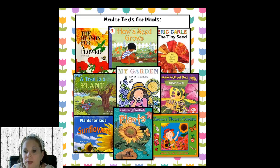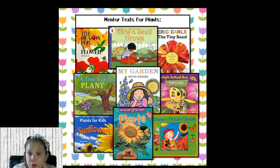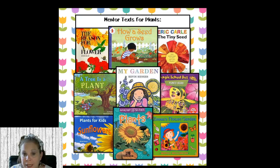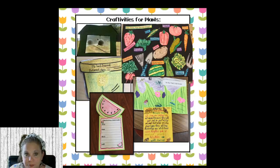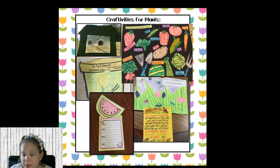Moving on to plants — a lot of teachers like to do the life cycle of a plant in April. Some great mentor texts include The Tiny Seed by Eric Carle, great if you want to grow sunflowers in class; The Magic School Bus plant seeds book; Zinnia's Flower Garden; My Garden by Kevin Henkes; A Tree Is a Plant; A Reason for a Flower; and How a Seed Grows. I have craftivities in my How Does Your Garden Grow thematic unit — you can have kids grow sunflowers, lima beans, pumpkin seeds, whatever you want, and hang them in the window. They also have an observation journal — a potted plant template where they color the sunflower on the front cover.